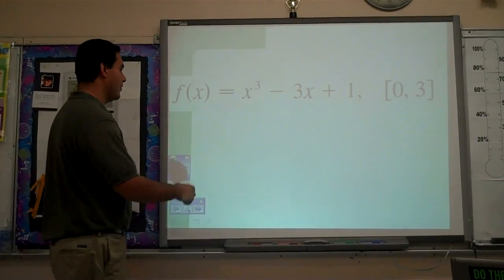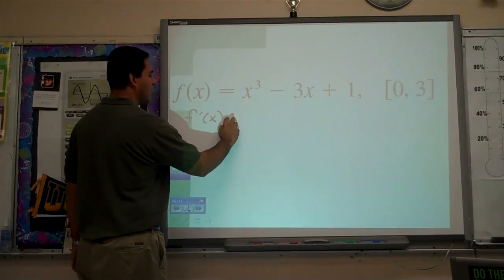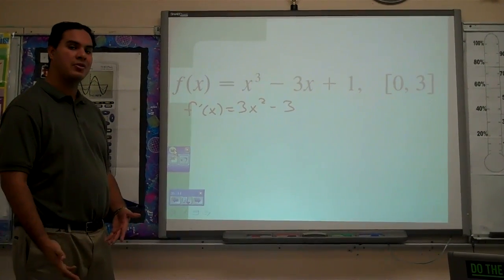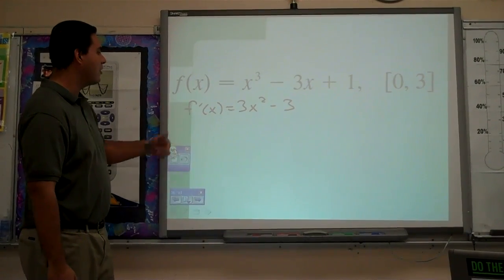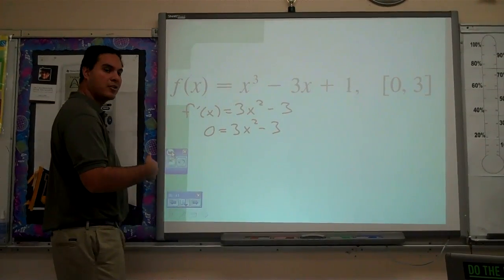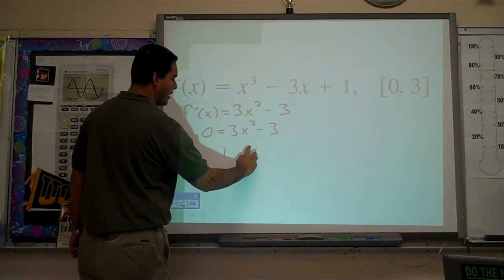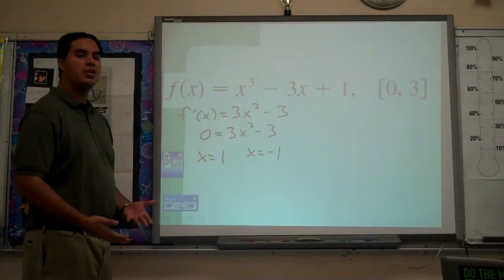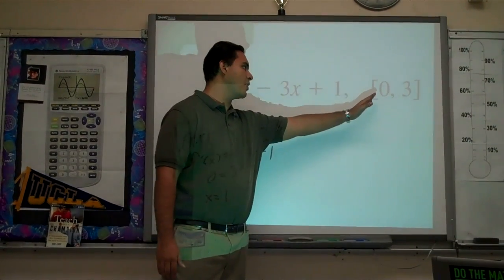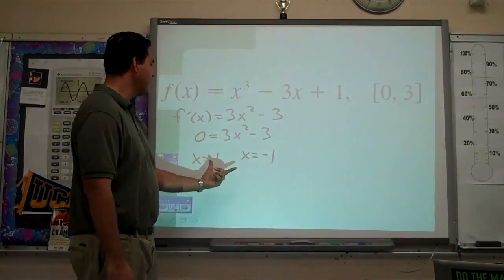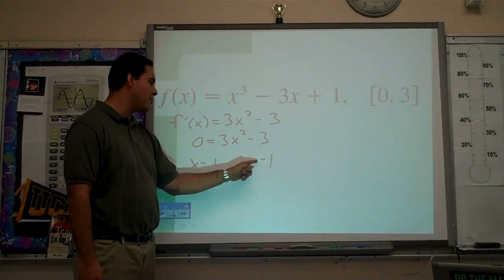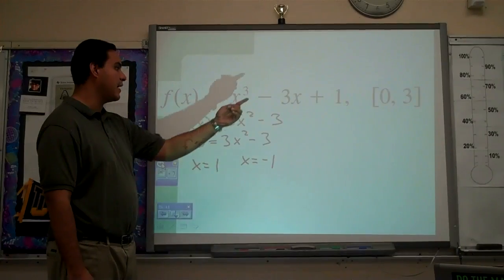The steps go as follows: we take a derivative to find what we call the critical numbers. Critical numbers are the values for x that make the derivative equal to 0 or the derivative undefined. So we take the derivative, set it equal to 0, and solve for x. In this case, when we solve for x, we get two solutions: x equals 1 and x equals negative 1. The critical number negative 1 is not going to be used because it's not in the interval from 0 to 3.